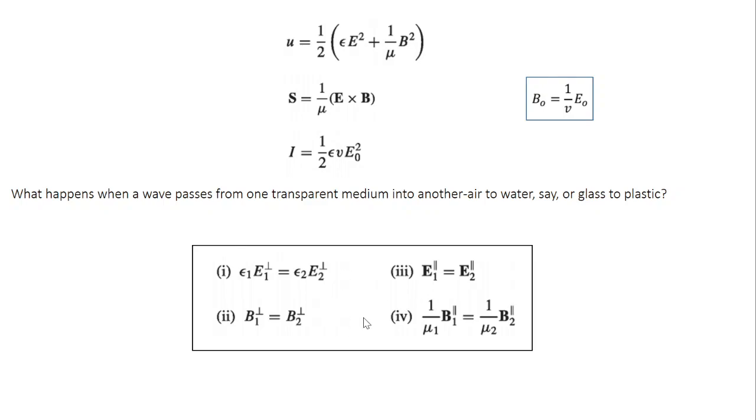So if the electromagnetic field travel from medium 1 to medium 2, we have seen that the parallel component of the electric field is continuous across the interface. Similarly, the perpendicular component is also continuous across the interface. So the complete electrodynamic boundary condition you can write as epsilon 1 E1 perpendicular equal to epsilon 2 E2 perpendicular. Similarly, B1 perpendicular equal to B2 perpendicular. E1 parallel equal to E2 parallel.